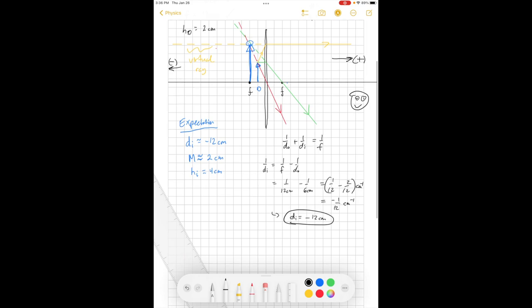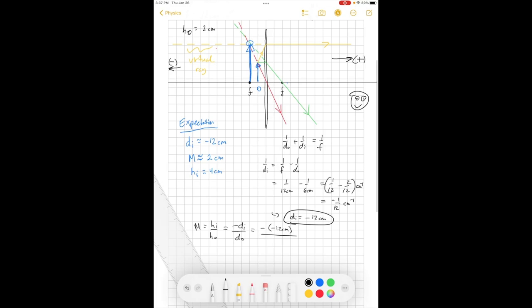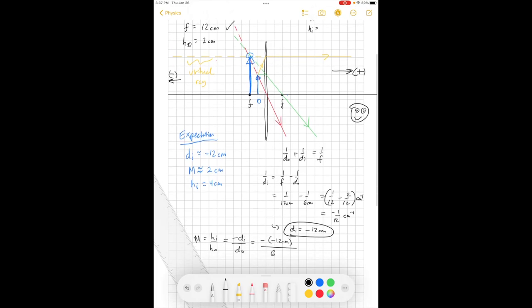We can now think about what the magnification is. The magnification is either image height over object height, or you can write it as minus the image distance divided by the object distance. We'll use that one. Minus, and then the image distance is itself negative, so two negatives make a positive. The object distance was 6 centimeters. So there's an overall positive, 12 over 6. The centimeters cancel, and we do find that the magnification is 2. So we got that right as well.